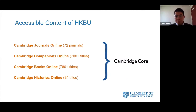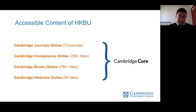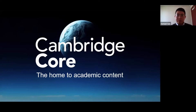Here is a brief look at the accessible content at HKBU. Currently HKBU has subscribed to 72 journals from CUP. Other content includes Cambridge Companions Online, Cambridge Books Online, and Cambridge Histories Online — these are all e-books. These titles mainly focus on humanities and social sciences. I will now introduce the platform which hosts all the journal and academic content of CUP, including all books and journals.